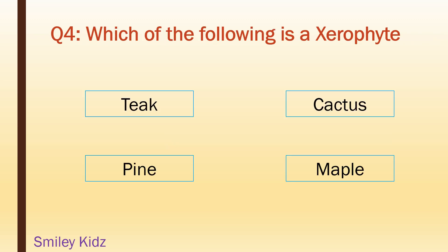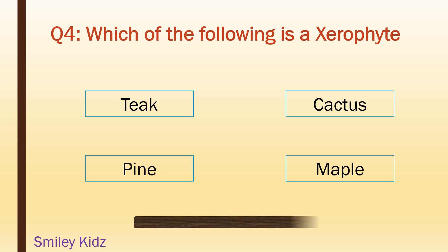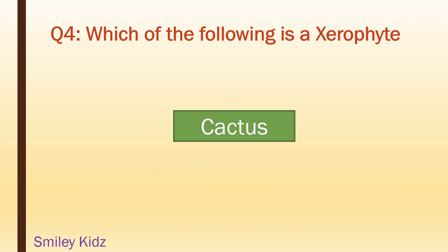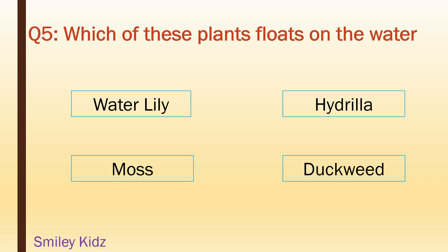Which of the following is a desert plant? Teak, cactus, pine, maple. Your time starts now. Your time is up. And the right answer is cactus.